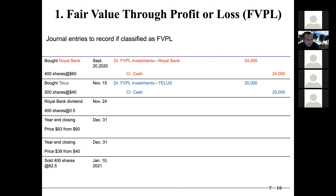Royal Bank dividend — Royal Bank shares issued a dividend of $0.50 for each share on November 24th. What's the journal entry? Debit cash and credit dividend income for $200.